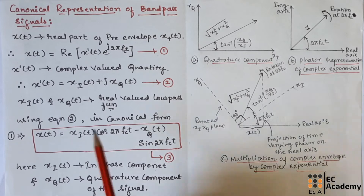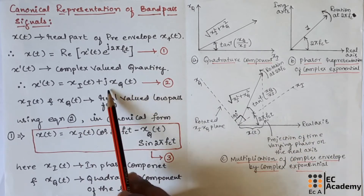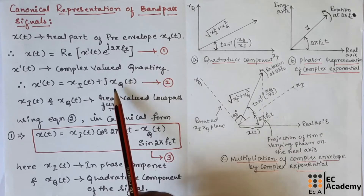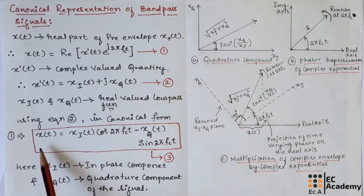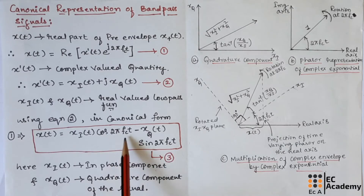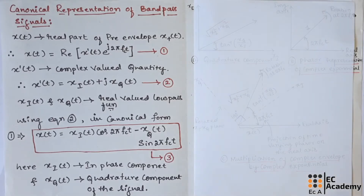Now, let us use equation 2 in equation number 1. If we substitute equation 2 in equation 1, we will obtain the expression: x(t) is equal to xI(t)·cos(2πfct) minus xQ(t)·sin(2πfct).